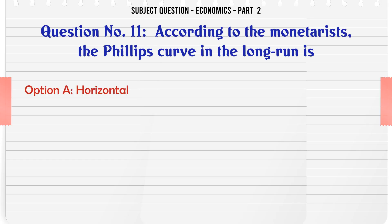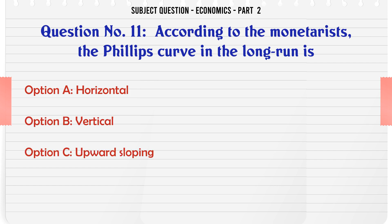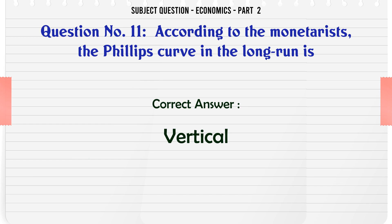According to the monetarists, the Phillips curve in the long run is: A. Horizontal. B. Vertical. C. Upward sloping. D. Downward sloping. The correct answer is: Vertical.